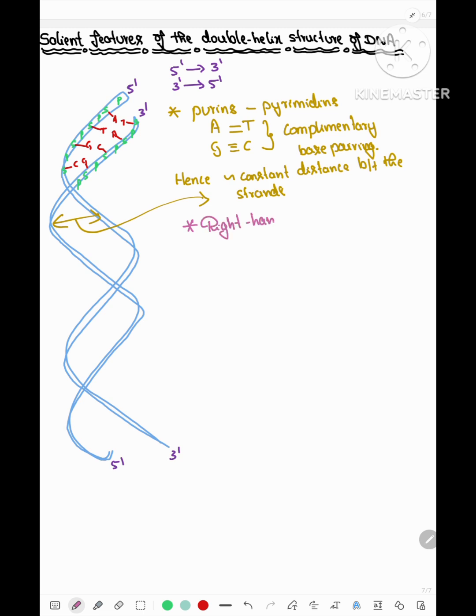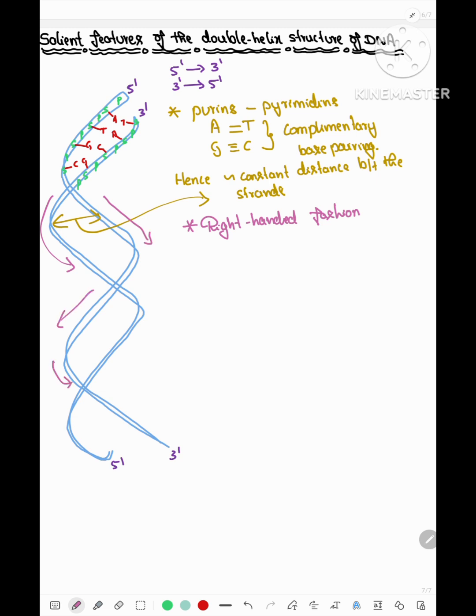The two chains are coiled in a right-handed fashion as shown in the figure and it results in the formation of a complete turn which is called a pitch. A pitch of the helix is 3.4 nanometers or 3.4 × 10⁻⁹ meters or 34 angstroms. Roughly, one pitch consists of 10 base pairs.